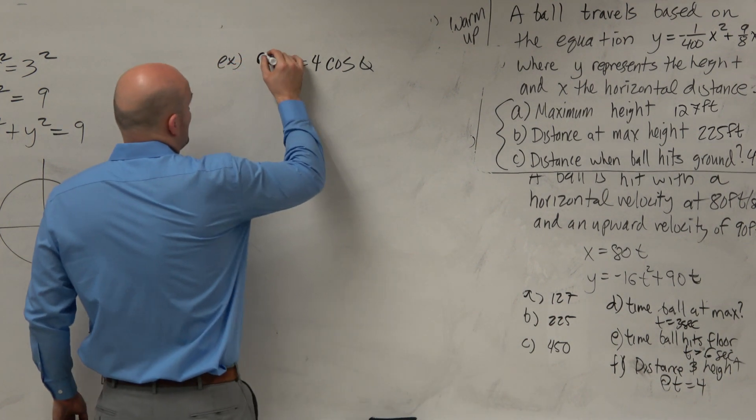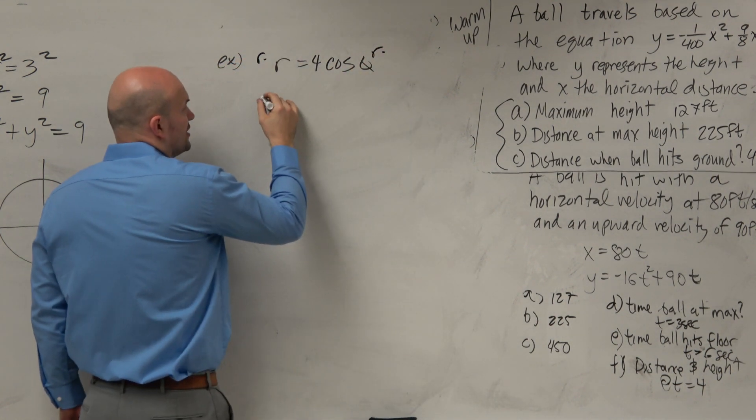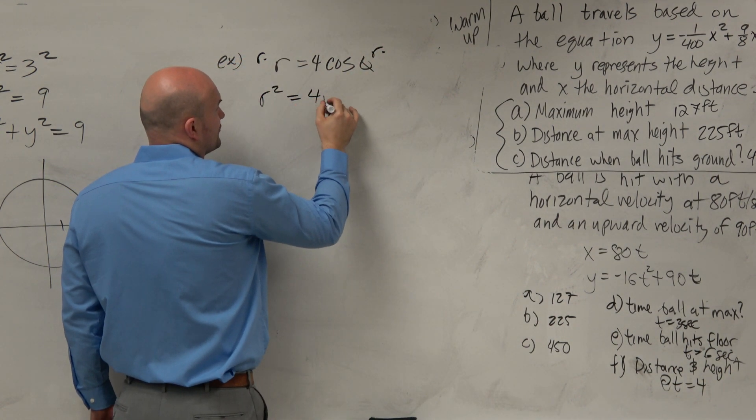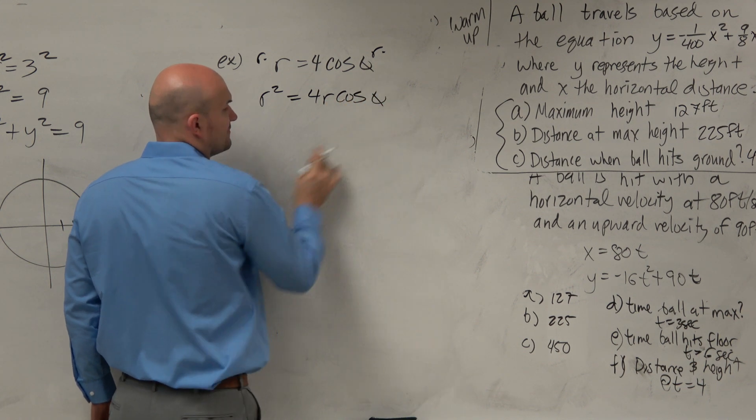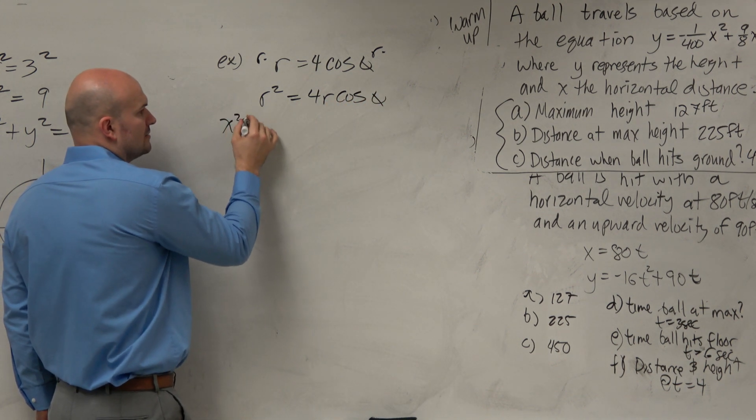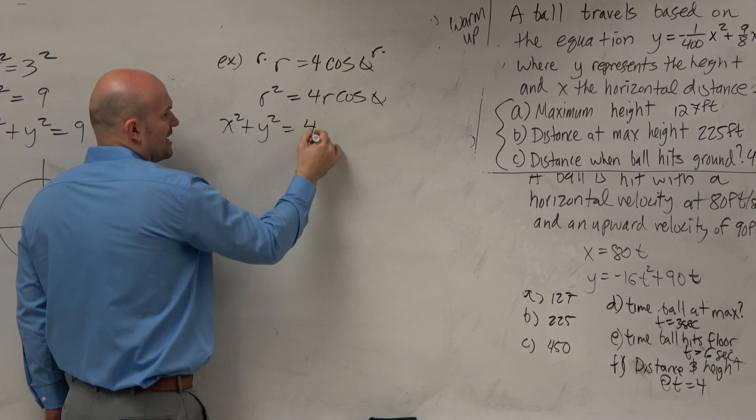So in this case, I'm going to multiply by r on both sides. Therefore, I get r squared equals 4r cosine theta. r squared is x squared plus y squared. 4r cosine theta is 4x.